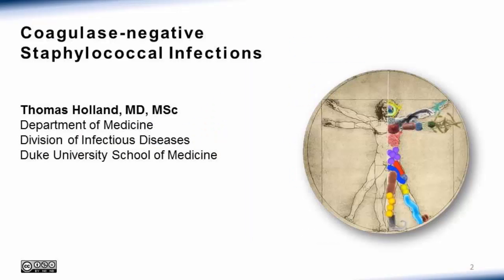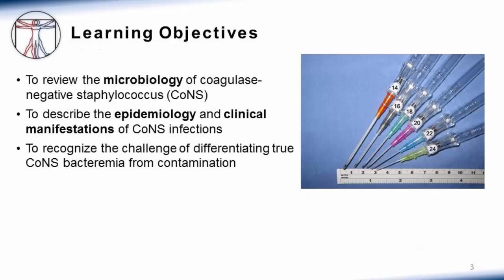In this talk I'll discuss coagulase negative staphylococcal infections. I want to first review the microbiology of coagulase negative staphylococci, describe the epidemiology and clinical manifestations of these infections, and I want you to recognize the challenge of differentiating true coagulase negative staphylococcal bacteremia from contamination, a common clinical scenario often in association with IV catheters.